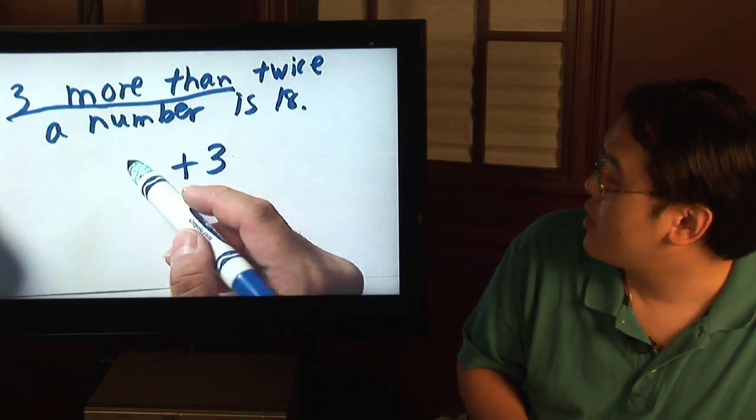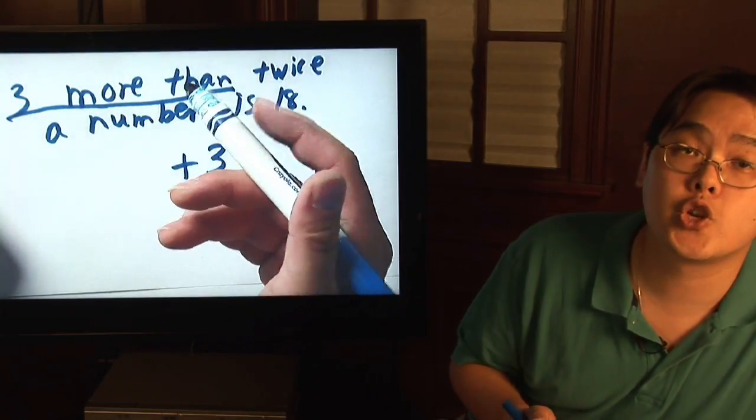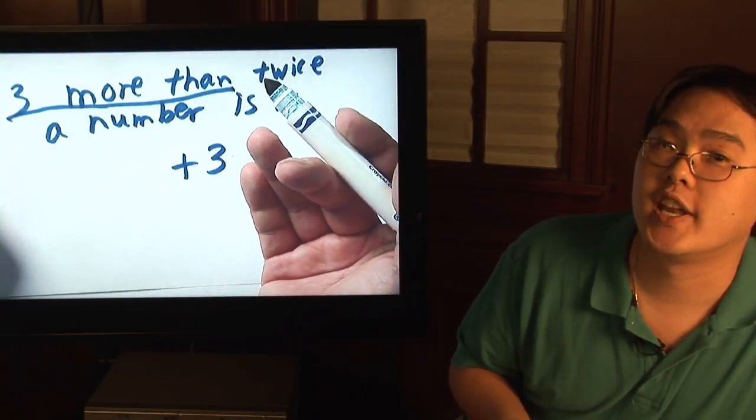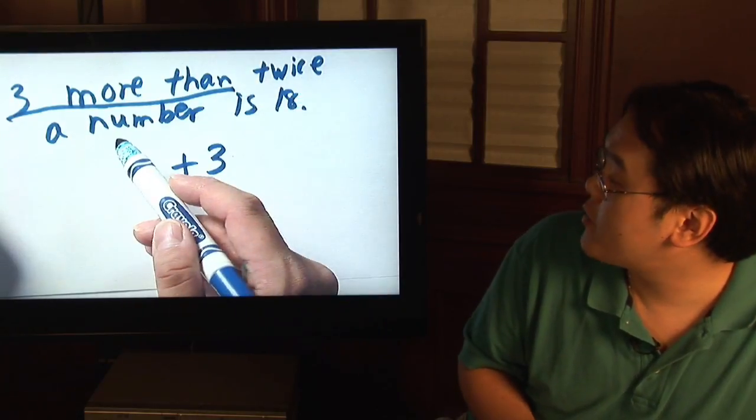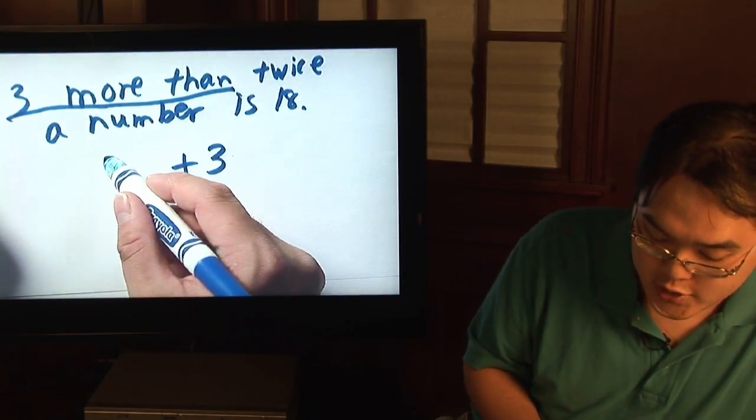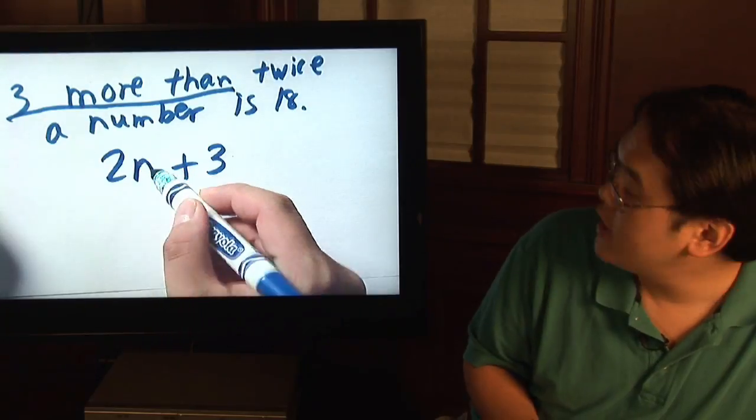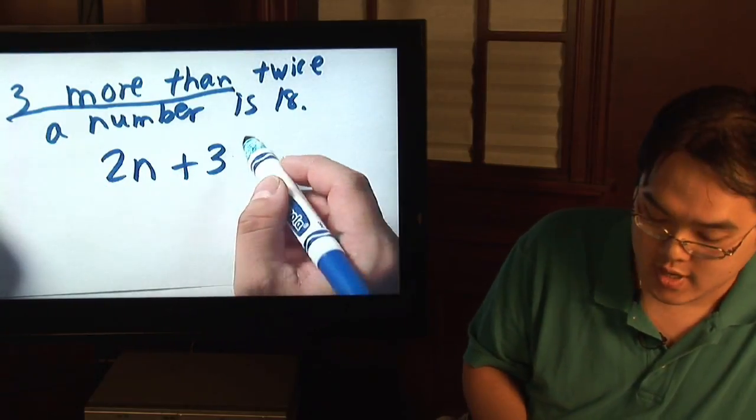Now twice a number. If you're doing something twice, you're doing it two times. Did I just say two times? Well that's exactly what you're supposed to do. Twice a number means two times a number. So you have two n, two times n.